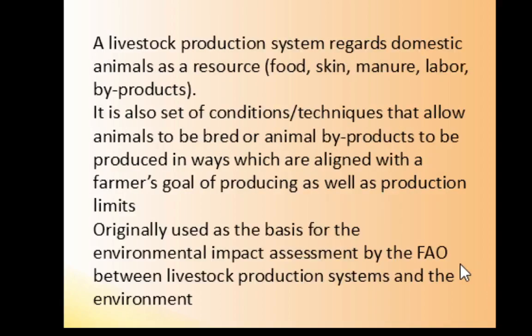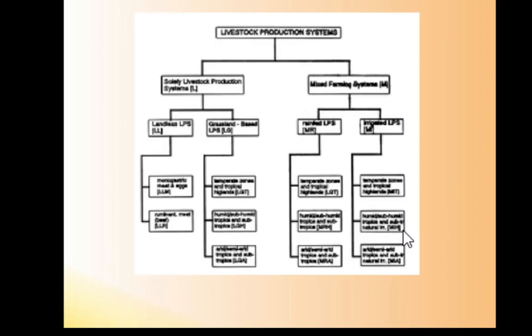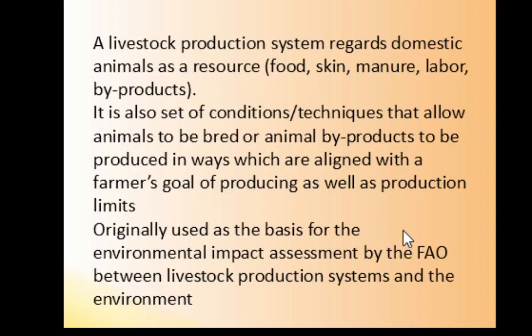A livestock production system regards domestic animals as a resource because they provide us with a source of food, skin, manure, labor, and animal byproducts. It is also a set of conditions or techniques that allow animals to be bred or animal byproducts to be produced in ways aligned with a farmer's goal of production and the limits the farmer sets for himself.